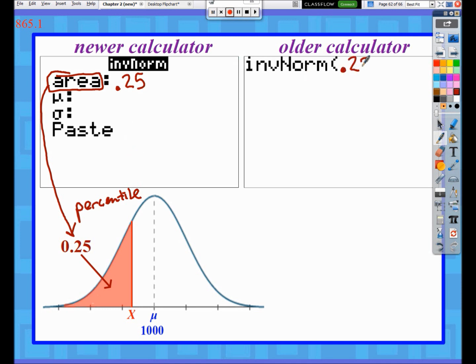We were at the 25th percentile, which has to be written as 0.25. If you've got an older calculator, you're going to type in after inverse norm 0.25 comma, and then it's wanting to know what the mean is. The mean was 1000 in this particular problem, so put in 1000 and then put in a comma.